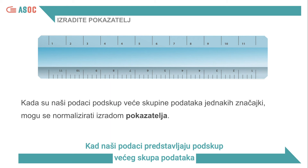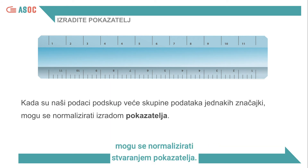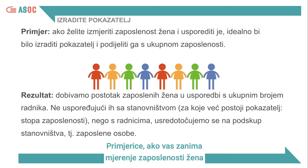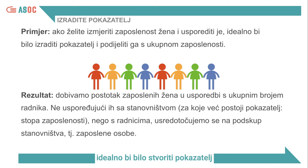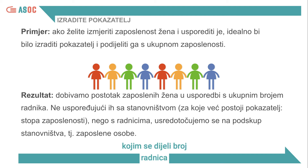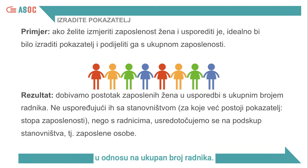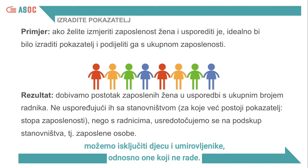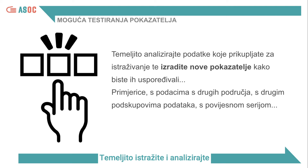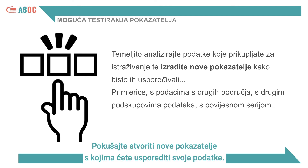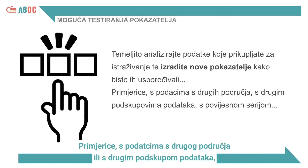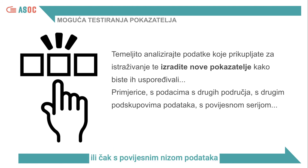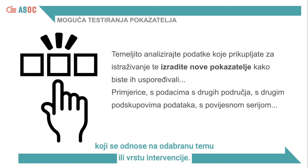When our data is a subset of a larger group of data relating to the same scope, they can be normalised by creating an indicator. For example, if you are interested in measuring female employment and comparing it, the ideal would be to create an indicator that divides the number of female workers by total employment. As a result, we have the percentage of employed women out of the total number of workers, excluding children and retirees — those who do not work. Thoroughly explore and analyse the data you are collecting and ask yourself what other information you can cross-check with. Try building new indicators to compare your data with data of another territory, another subset of data, or even a historical data series related to the chosen topic or type of intervention.